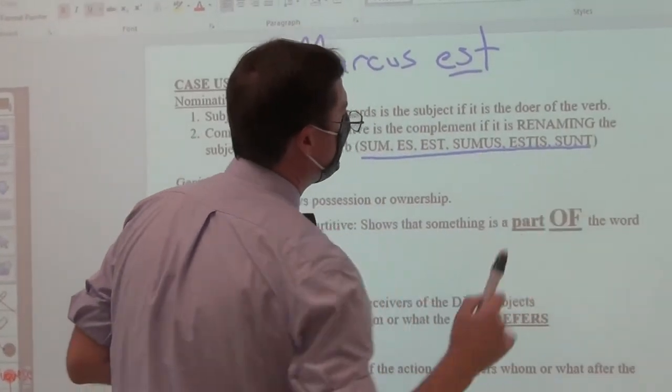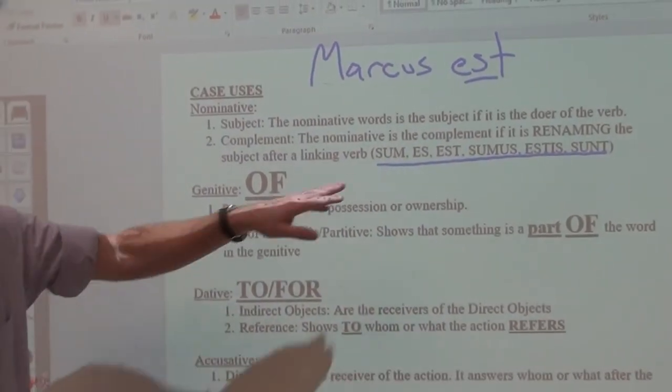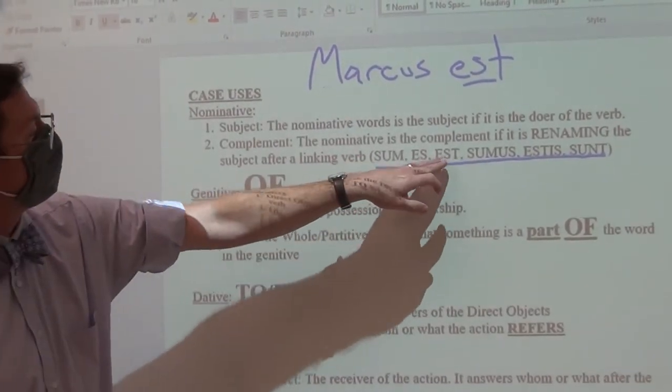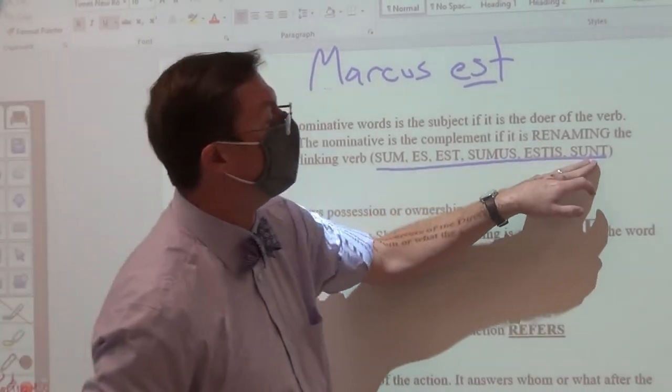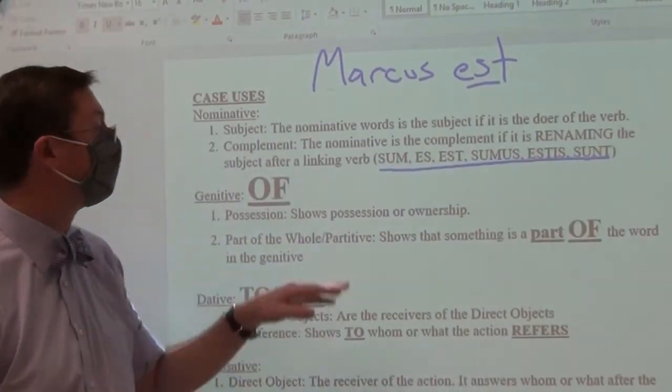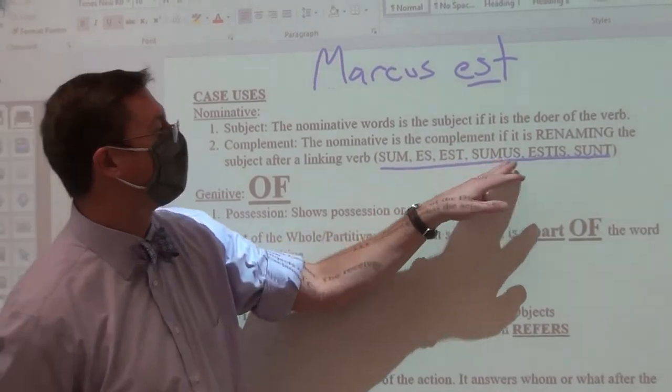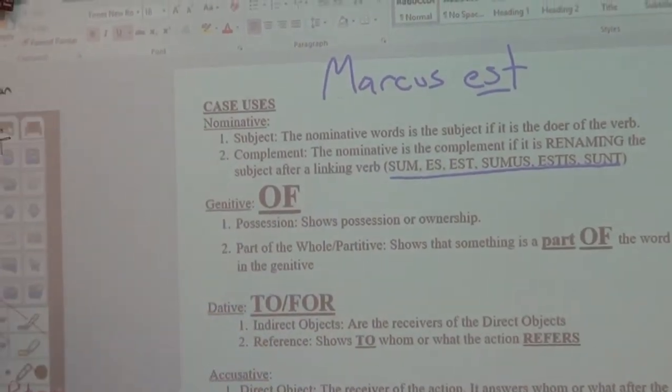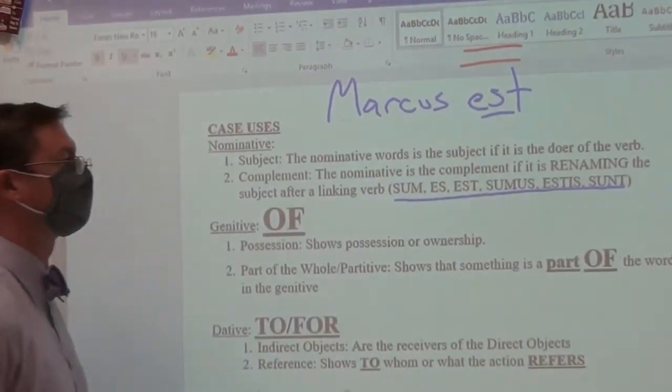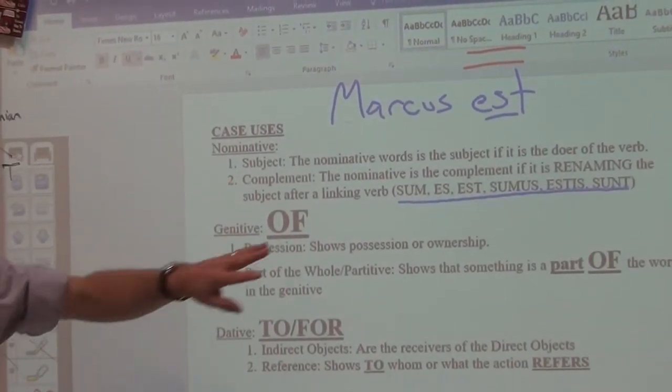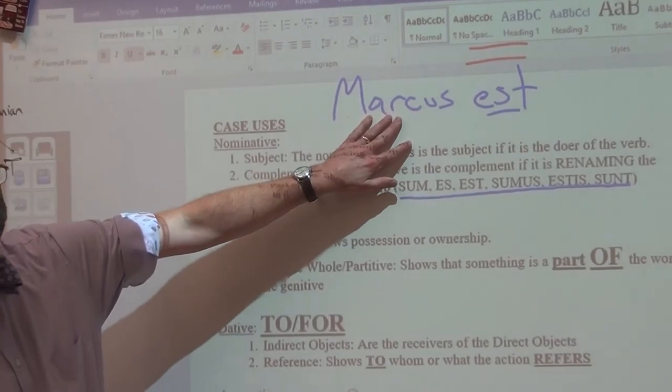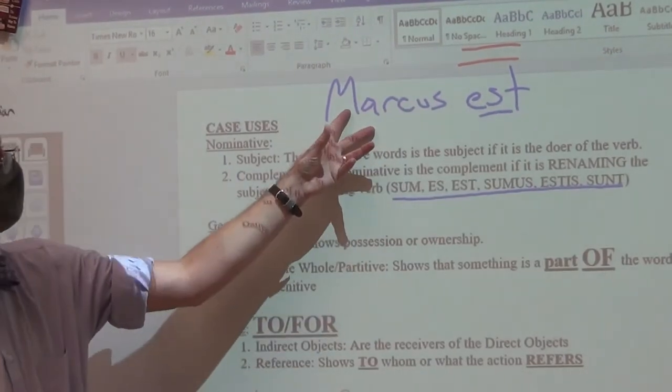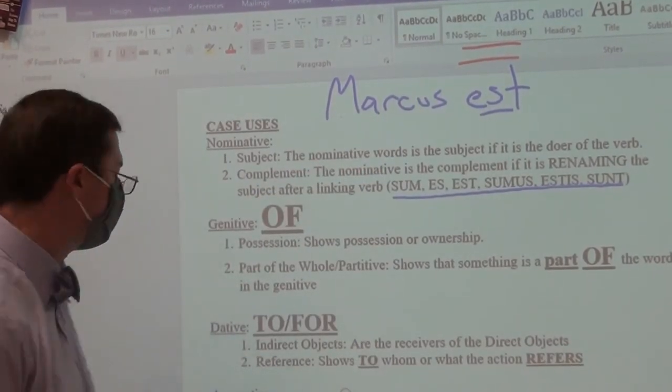Sum esse fui futuris. Here I list out all the presents, but you could have also had the imperfect. Eram eras erat, eramus eratis erant, or the future. Ero eris erit, erimus eritis erunt. Or you could even have the perfect fui fuisti fuit, fuimus fuistis fuerunt. But regardless, they all do the same thing. And all linking verbs act as equal signs. So that means, since our nominative subject is nominative, our complement, which is the word linked to the subject by the linking verb, also has to be nominative.